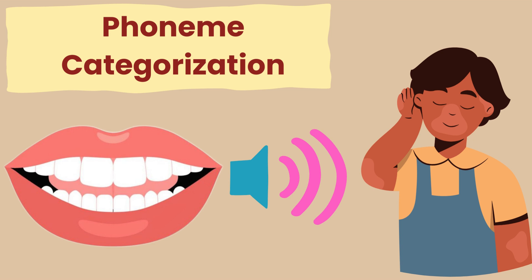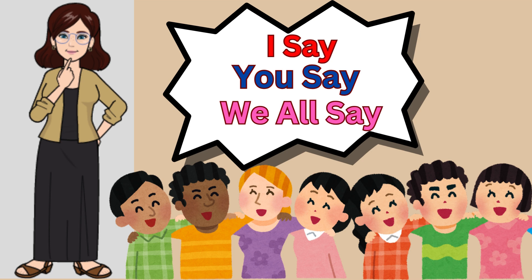Phoneme categorization. I will say three words. You will say the three words back to me. We will say the three words together. Then we will say which word does not have the same initial beginning sound. Example: I say daisy, dog, monkey. You say daisy, dog, monkey. We say daisy, dog, monkey. Which word out? Monkey. I say cake, cap, run. You say. We say cake, cap, run. Which word out? Run. I say mop, make, toe. You say. We say mop, make, toe. Which word out? Toe.